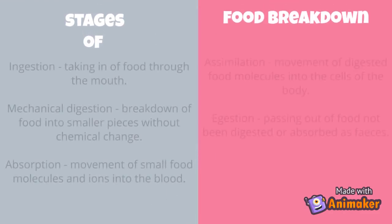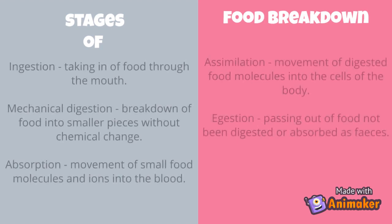Mechanical digestion is the breakdown of food into smaller pieces without chemical change. Absorption is the movement of small food molecules and ions into the blood. Assimilation is the movement of digested food molecules into the cells of the body.